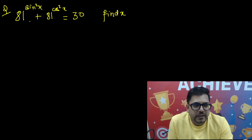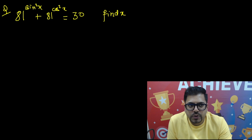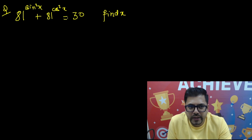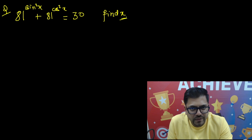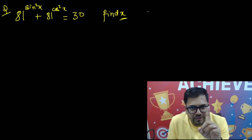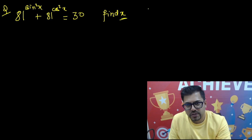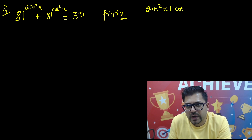Hey guys, let's talk about today's question. We have to solve: 81 raised to power sin²x plus 81 raised to power cos²x equals 13, and find the value of x. For this you will require two formulas. The first formula is the trigonometric identity: sin²x plus cos²x equals 1.